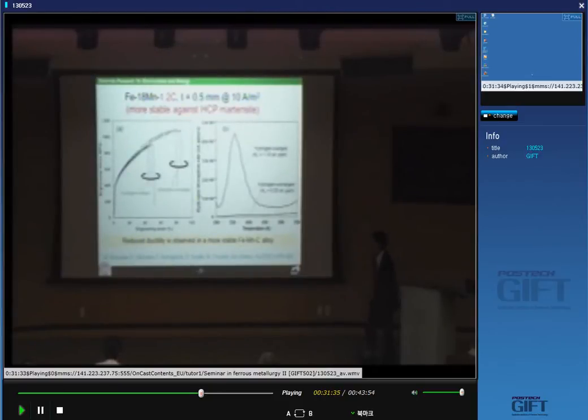Phase stability. To get more stable material, I changed chemistry, carbon to 1.2 weight percent from 0.6 carbon, because this is more stable against HCP epsilon type martensite. But still, reduced ductility is observed like this.